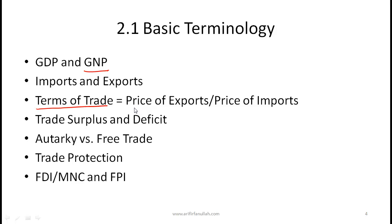Terms of trade simply means the price of exports divided by the price of imports, obviously in the same currency. If you have a number greater than 1, that means your overall exports in dollar terms exceed overall imports. Trade surplus means your exports exceed your imports — probably the biggest trade surplus in the world today is with China. Trade deficit is the opposite, which is the case in Pakistan and also in the US.